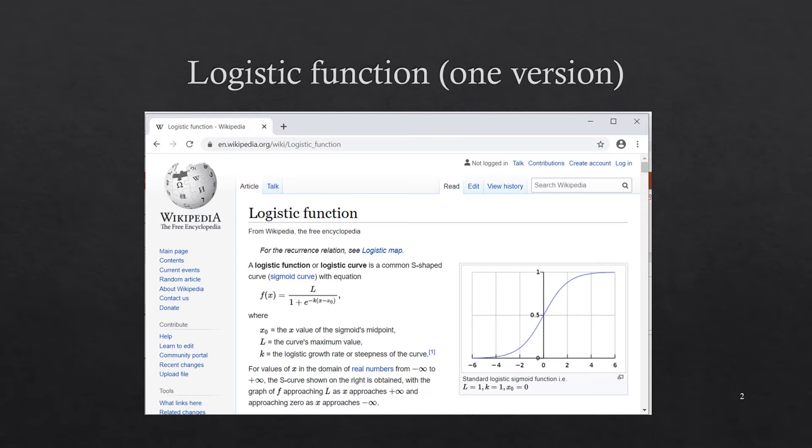It will have three parameters. The first parameter x0 will determine where the middle of the s occurs on the horizontal axis. The parameter l will show how high the s goes, and k will determine how quickly it goes from 0 to l.